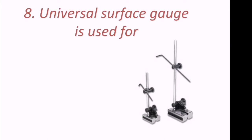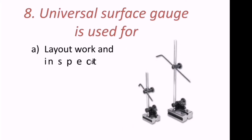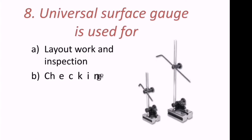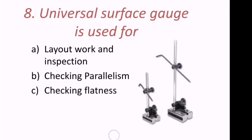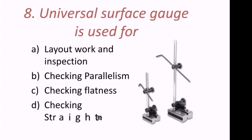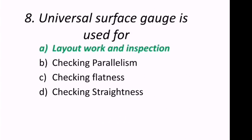Eighth question: A universal surface gauge is used for what? We can see it in the figure. The options are: lay out work and inspection, check the parallelism, check the flatness, or check the straightness. The universal surface gauge is used for lay out work and inspection — A is the correct answer.